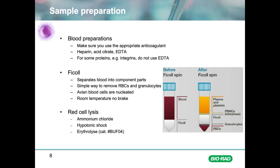Red blood cells make up about 95% of whole blood and can make detecting leukocytes difficult during analysis. Therefore, removal of the red cells is an important step, which can be done before or after staining. If removing the red cells is not an option, you can use CD45 staining to gate out the red blood cells as they will be negative. One method to remove red cells is to use density gradients such as Ficoll or Lymphoprep.